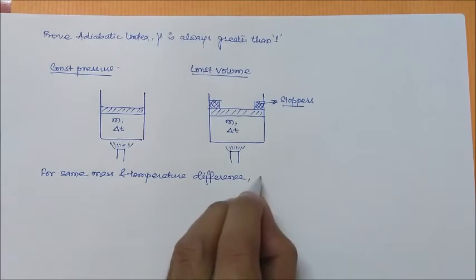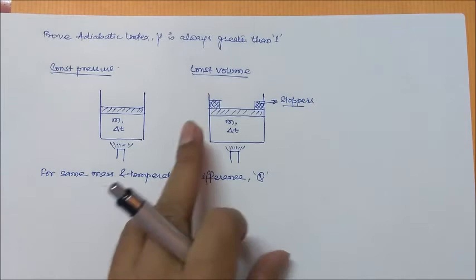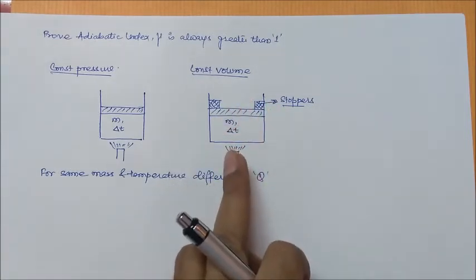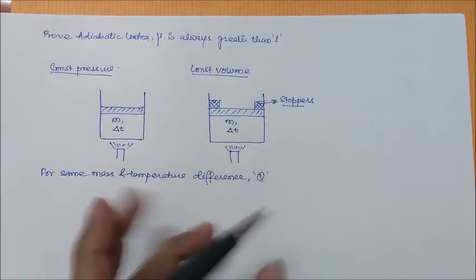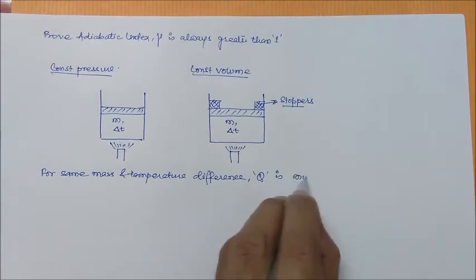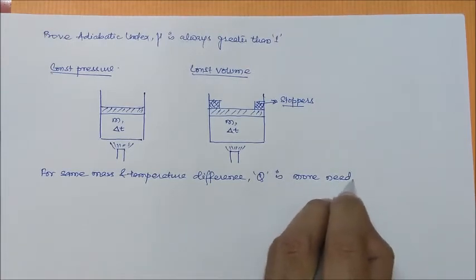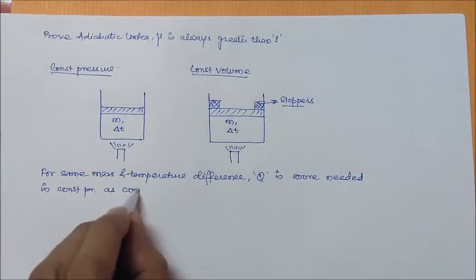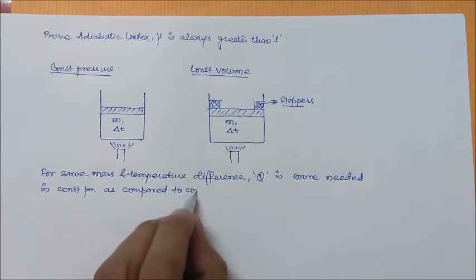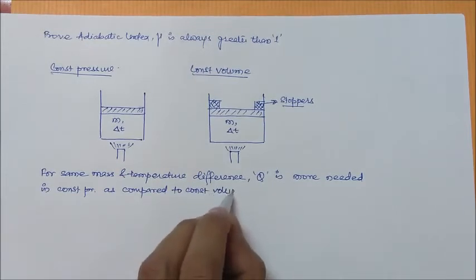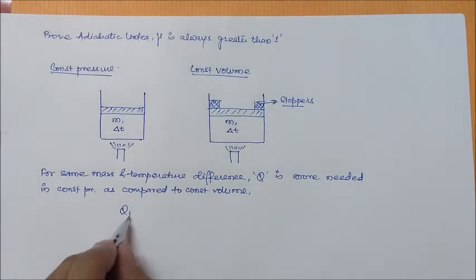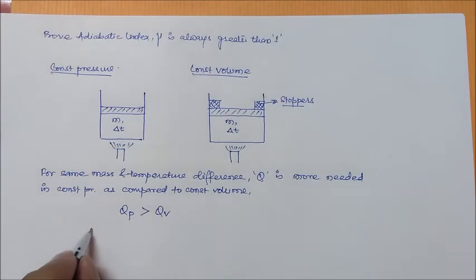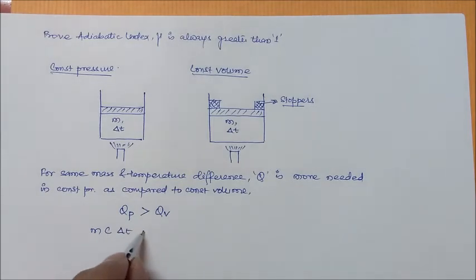For the same mass m and same temperature difference delta T, the heat required is more in the case of constant pressure compared to constant volume. This is evident because in the constant volume arrangement, less heat is required. Therefore, heat for constant pressure is always greater than heat for constant volume.